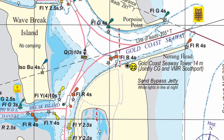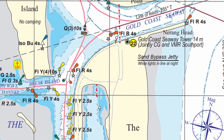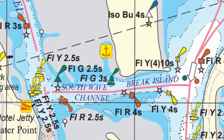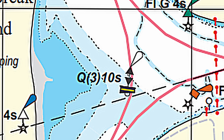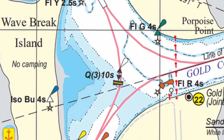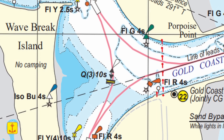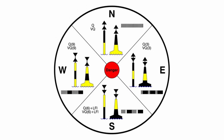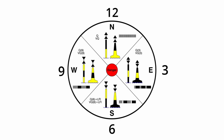Looking at all the lateral markers in the main channel, the main channel has lateral markers flashing every 4 seconds, but the other channels that lead into the main channel have lateral markers that flash every 3 seconds. The cardinal marker is a little bit different. The one in front of Wavebreak Island says Q(3) 10S — Q means quick flashing, the 3 in brackets means it flashes 3 times, because it's an eastern cardinal marker, and 10S means it does this every 10 seconds. If you didn't watch my video on cardinal markers, it discusses how cardinal marker lights work using the face of a clock to remember them.